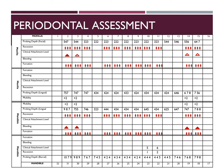There is also mobility on teeth number 2, 3, 14, 15, 18, 19, 30, and 31. As you can see on the probing depths, even in the anterior, the probing readings are very high.